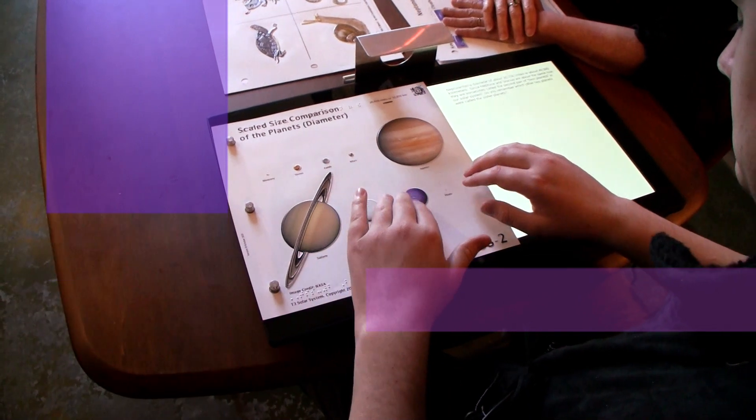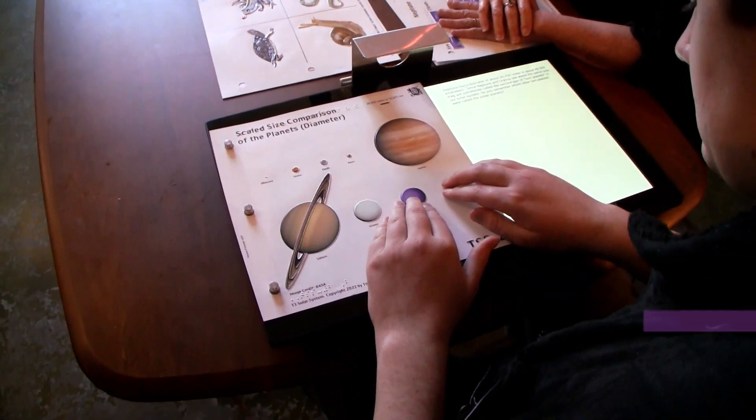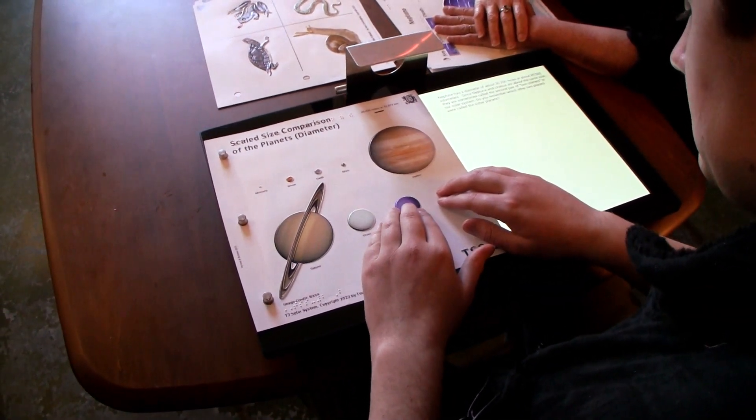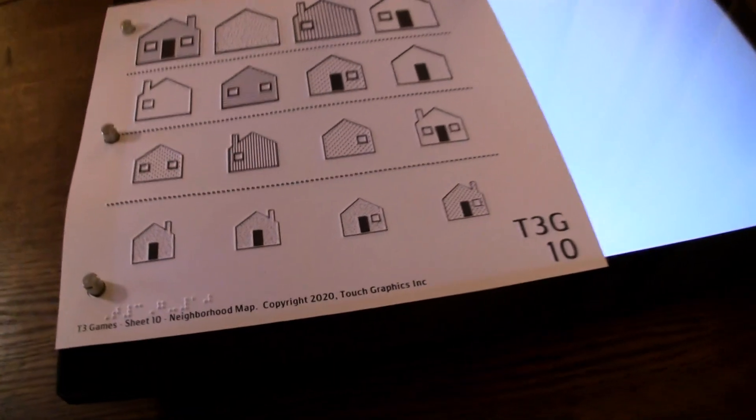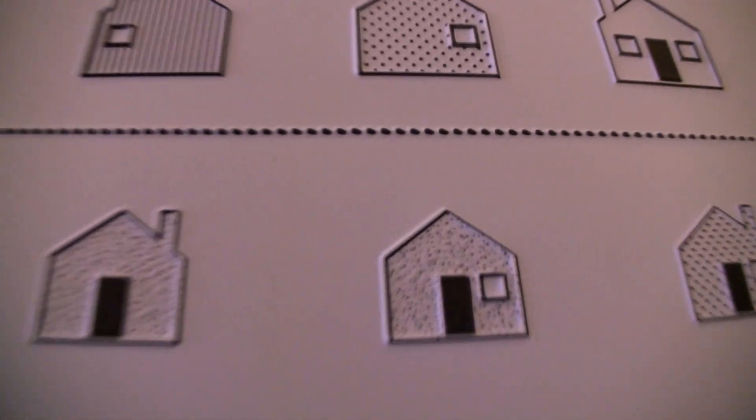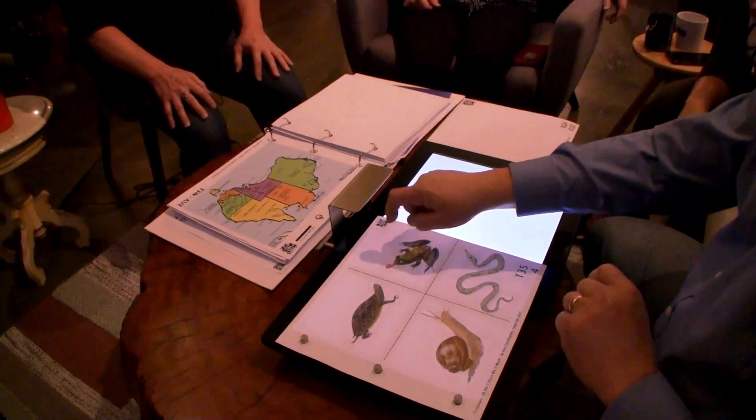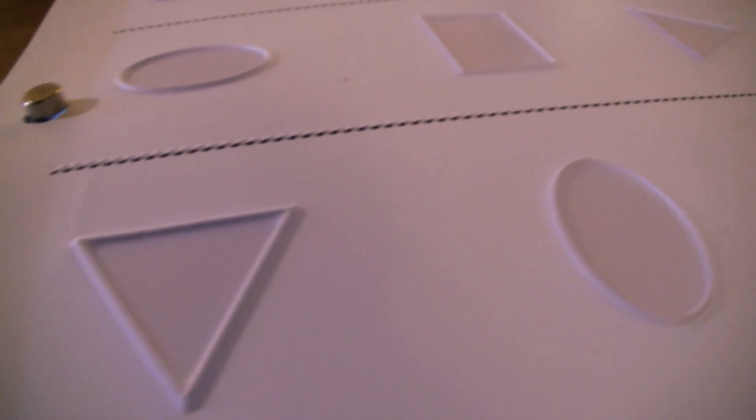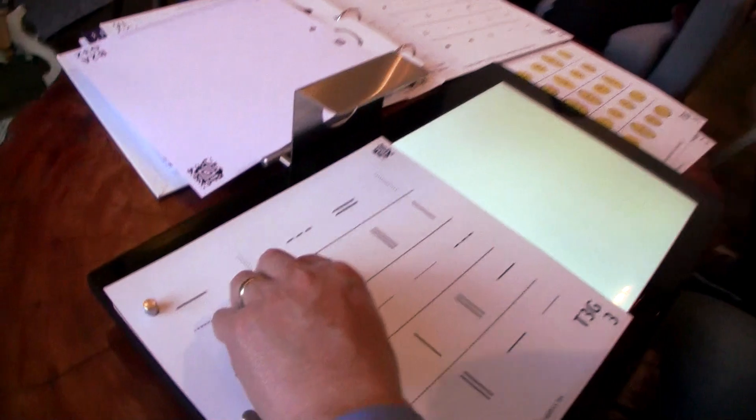Neptune has a diameter of about 30,700 miles or about 49,500 kilometers. It's the most elegant audio tactile graphics system that's ever been created. This has it all. You know, we have the tactile and the audio feedback and so it's really a great product for our students.